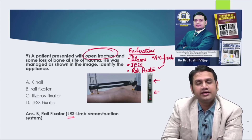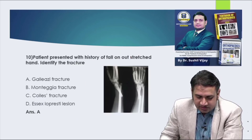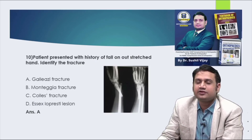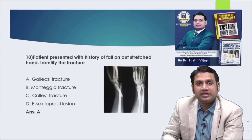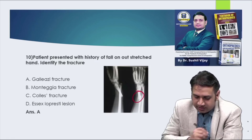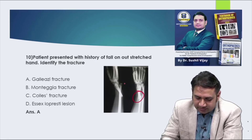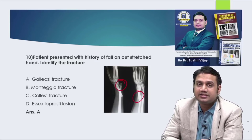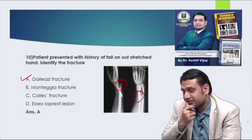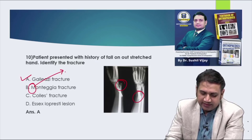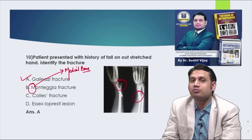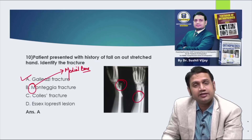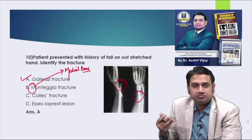Question ten: a patient presented with history of fall on outstretched hand — identify the fracture. The image showed a fracture in the shaft of the distal radius with subluxation of the distal radioulnar joint — this is a Galeazzi fracture. To differentiate from Monteggia: Monteggia involves the Medial bone (ulna) — fracture of proximal ulna shaft with dislocation of the proximal radial head. This question was a repeat from two years prior in AIIMS.